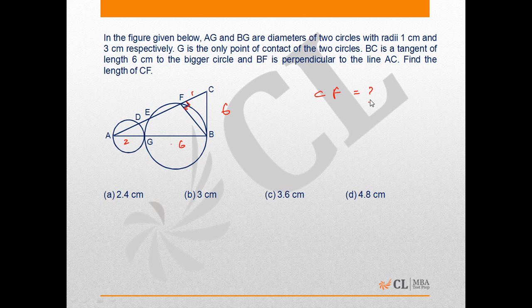If we look at triangle ABC, we can say that it is a right angle triangle, as the tangent is perpendicular to the line drawn from the center to the point of contact with the circle.